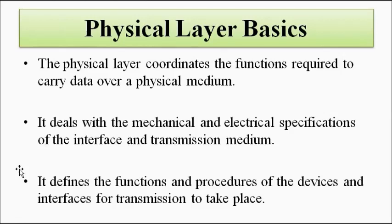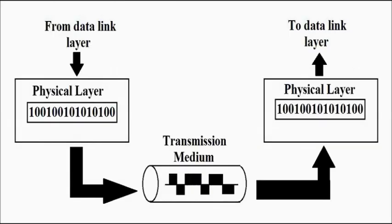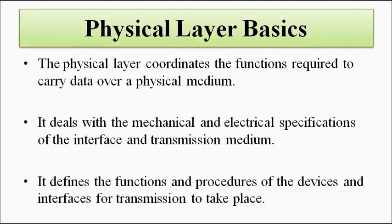In data transmission between two devices, data is sent in the form of bit streams — in binary form. A bit is a binary digit; it can be a zero or a one, transmitted as a series of zeros and ones. The physical layer defines all the characteristics and features of the transmission medium and the devices connected to it, to send that bit stream from the source to the destination.